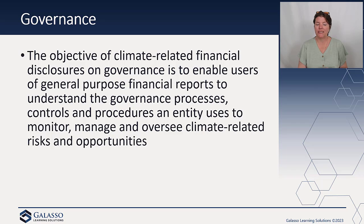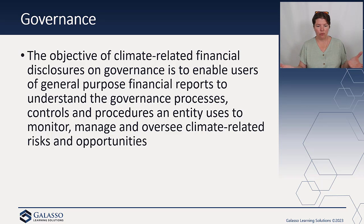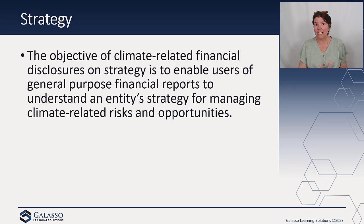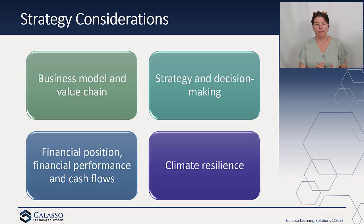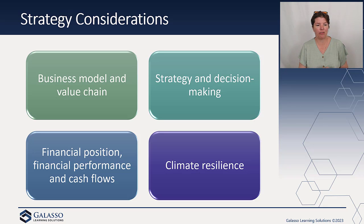How are they managing and overseeing climate-related risks and opportunities? Looking at the role of the board — what are their competencies with respect to climate, and what is the board doing in this area? In the area of strategy, this is trying to help users understand what is the entity's strategy for managing climate-related risks. This could be the current and anticipated effects of climate-related risk and opportunity, including the business model, value chain, and purchasing decisions.